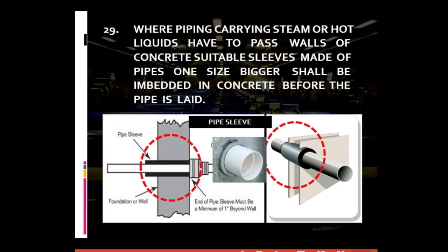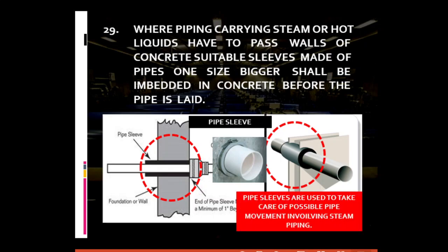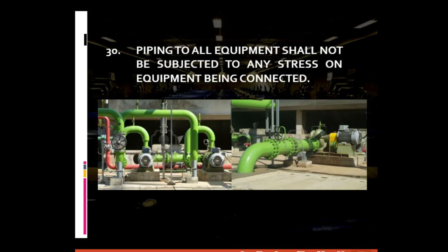A pipe sleeve is used to accommodate thermal motion or thermal movement, preventing the buildup of thermal stress. For general piping requirement number thirty: piping to all equipment should not impart any stress on the equipment being connected. Machines or equipment to which pipes are connected are more expensive than the pipes themselves. Thus, there should be no unnecessary stress — by way of vibrations — coming from the pipes that could affect the machines. Specialized kinds of piping supports that take care of any unnecessary loads, forces, or movements are used, as shown in general piping requirement number two.